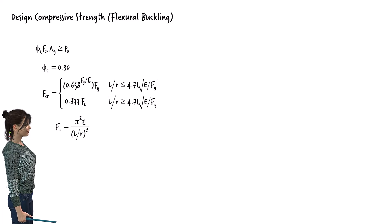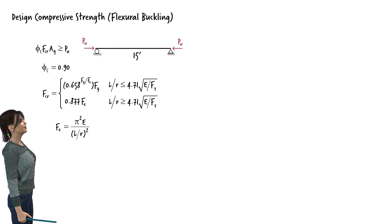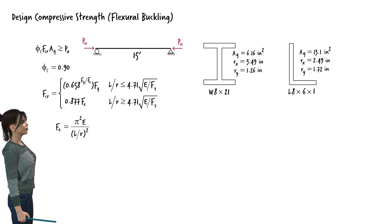Let's calculate the design compressive strength for a structural member having a length of 15 feet using two standard sections: a W-8 by 21 section, and an L-8 by 6 by 1 section. In this example, we assume the member is pin-supported at both ends. We will discuss how other boundary conditions impact the solution in future lectures. The pertinent properties of the two standard sections are given in the AISC manual.